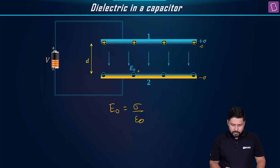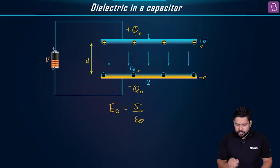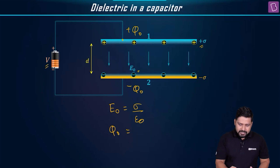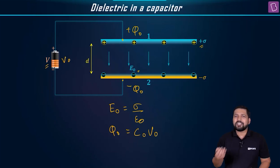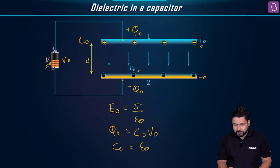Sigma is the charge density. Now, what about the charge? Let us say Q₀ charge comes in — plus Q₀ on the positive plate and minus Q₀ on the negative plate. The initial charge Q₀ is equal to C₀ times V₀, where the capacitance is C₀ and the voltage at steady state is V₀. So Q₀ = C₀ × V₀, and C₀ = ε₀A/D.